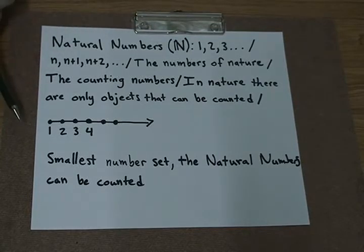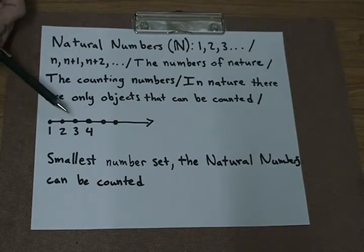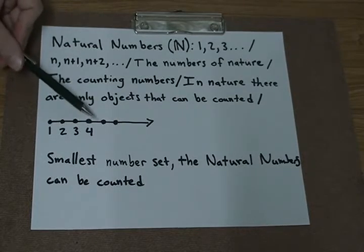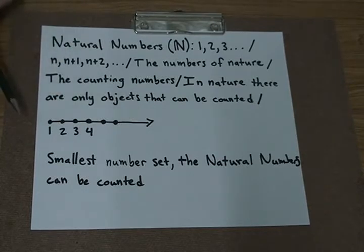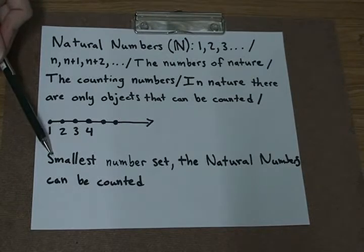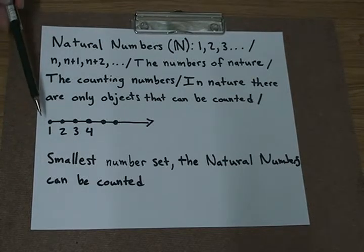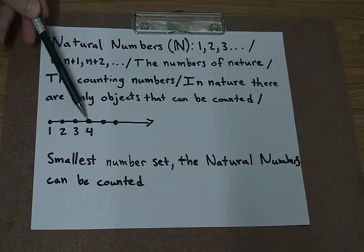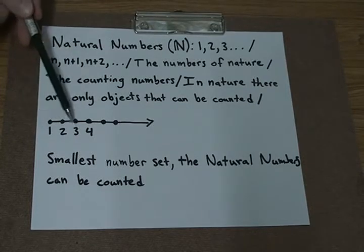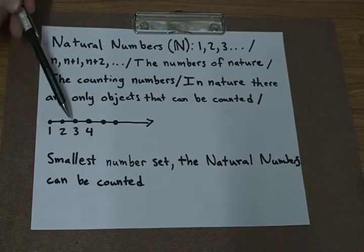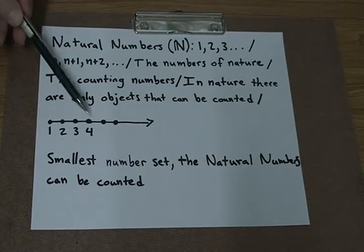Let's look at the graph of the natural numbers. The graph starts at 1, 2, 3, 4, and it continues on forever. This is going to be the smallest number set, and the natural numbers can be counted. You can count these 1, 2, 3, 4, and keep counting. Even though it continues on forever, they can be counted.